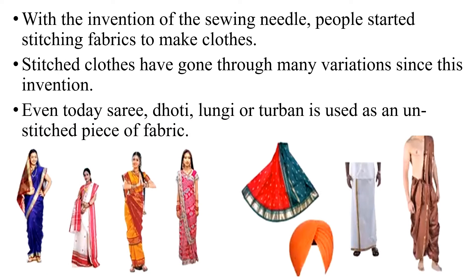In those days, stitching was not known. People simply draped the fabrics around different parts of their body, and many different ways of draping fabrics were used. With the invention of the sewing needle, people started stitching fabrics to make clothes. Stitched clothes have gone through many variations since this invention. Even today, saree, dhoti, lungi, or turban is used as an unstitched piece of fabric.